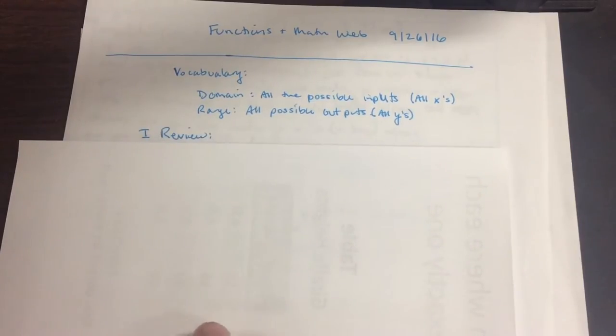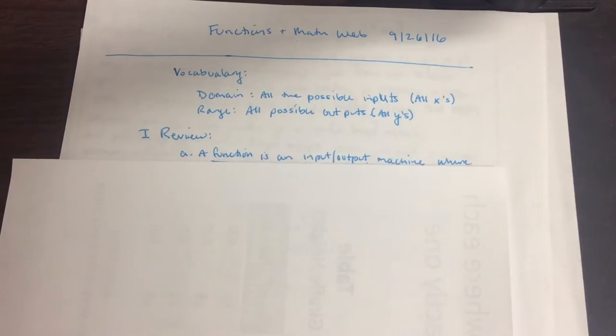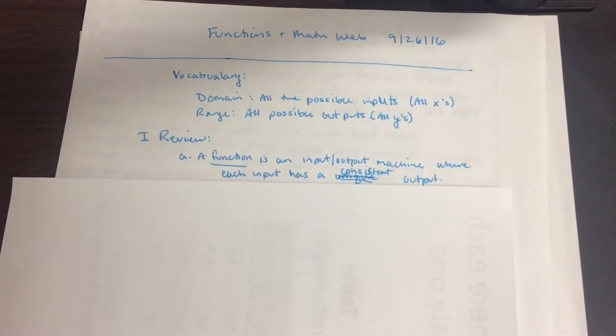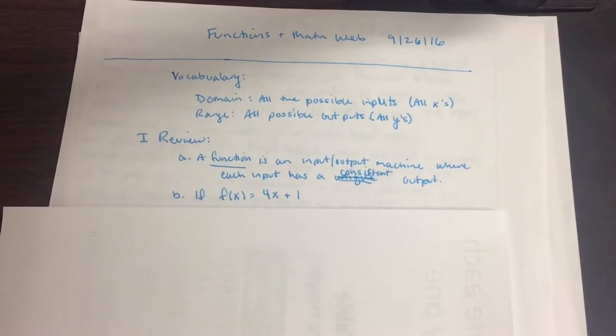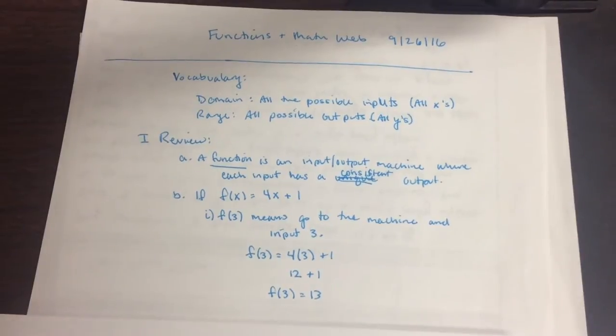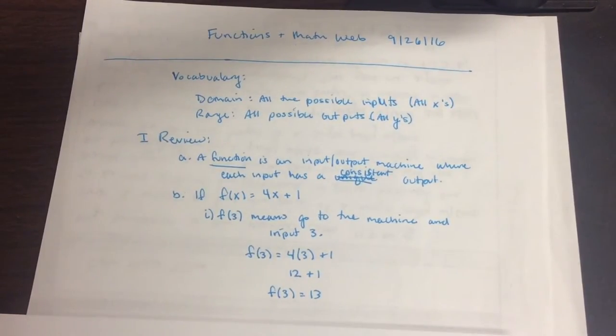In part one here, we're going to say review, just kind of review of functions. In A, we're saying a function is an input-output machine, where each input has a consistent, unique output. I like the word consistent a little bit better today, so I'm going to say that. So a function is an input-output machine, where each input has a consistent output. So if f of x equals 4x plus 1, we have this f machine that is inputting x's, and the rule is 4x plus 1. If we are asked what f of 3 means, it means go to the machine and input 3. We have some math we can start doing. So f of 3 equals 4 times 3 plus 1. I've inputted 3 in for x. This gives me 12 plus 1, or that f of 3 equals 13. And we like this notation, because it's telling us a lot of stuff all in one sentence, and it's pretty cool to be able to show all the results like this.